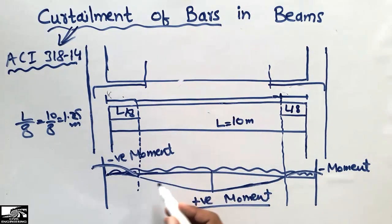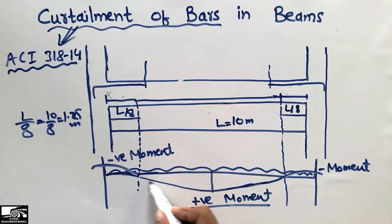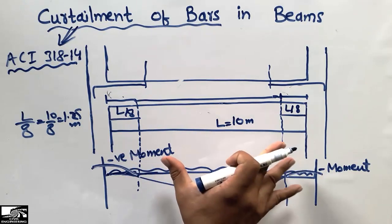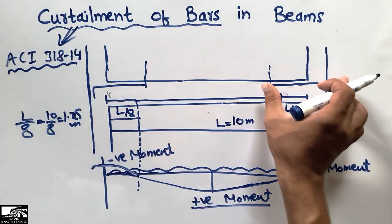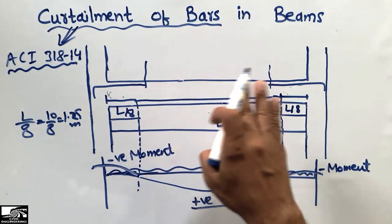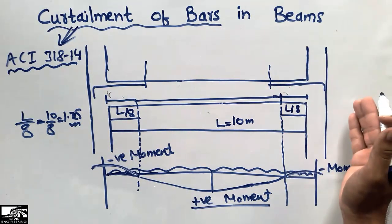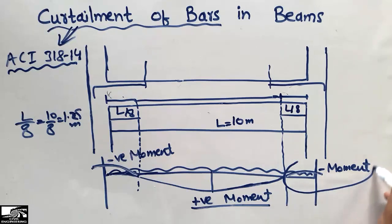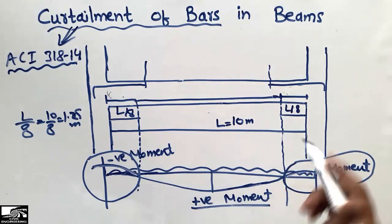The top bars are curtailed because there is no negative bending moment at the mid portion of the beam — the negative bending moment is zero there, while only positive moment exists at midspan. Therefore, there is no need to place negative reinforcement (top bars) at the top of the beam in the mid region. We only place negative bars at the ends of the beam, at the supports, where the moment is negative.